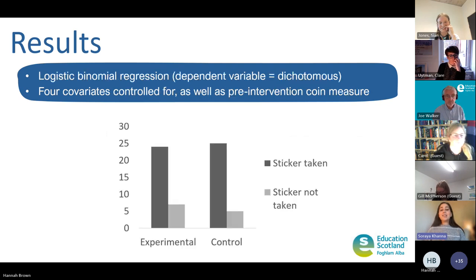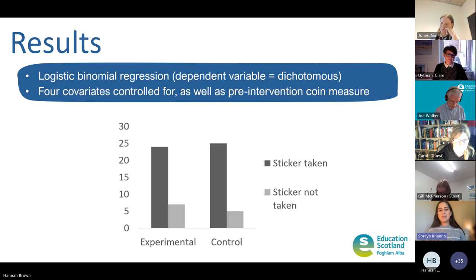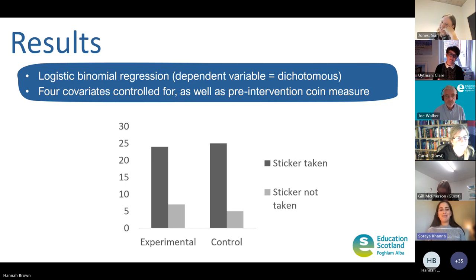To test group differences for the self-reported measure — the sticker — I did a binomial logistic regression, again controlling for those covariates as well as the pre-intervention coin measure. The model wasn't significant and the choice to wear a sticker was very similar between groups. When we reflected back, we wondered whether using stickers is really an accurate way to measure behaviour, as some children might have chosen to wear one just because they saw a classmate had one.